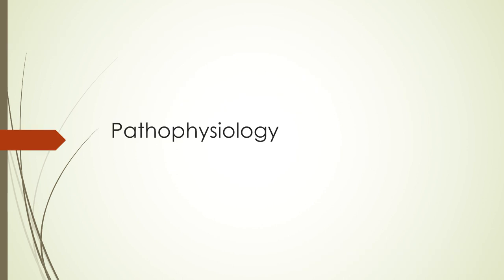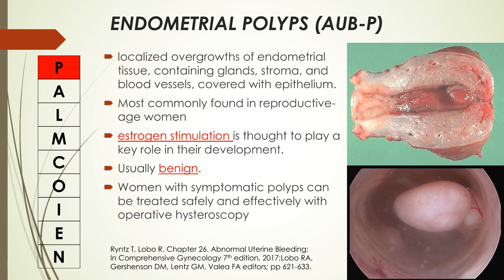Let us now discuss the pathophysiology of AUB based on the PALM-COEIN classification. First, AUB-P, or AUB due to endometrial polyps. Endometrial polyps are localized overgrowths of endometrial tissue, containing glands, stroma, and blood vessels covered with epithelium. These are most commonly found in reproductive age women, and estrogen stimulation is thought to play a key role in their development. These polyps are usually benign, and women with symptomatic polyps can be treated safely and effectively with operative hysteroscopy.